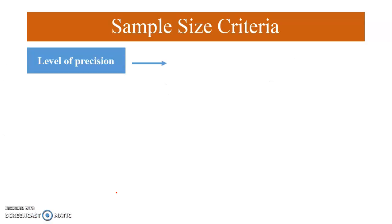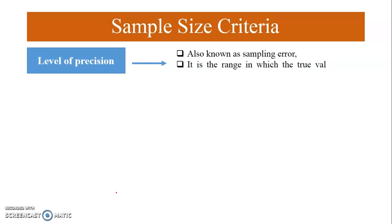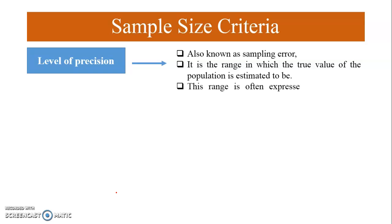The level of precision is also referred to as the sampling error. It is the range in which the true value of the population is estimated to be, and it is often expressed in percentage terms — for example, plus or minus 5%.